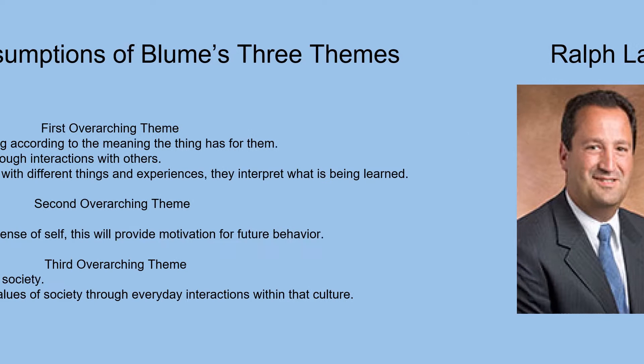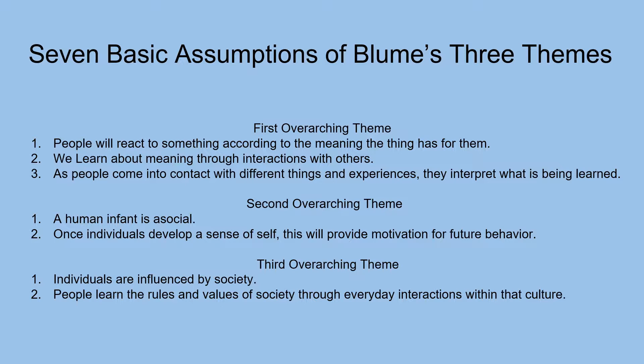The seven basic assumptions organized around Blumer's three themes. First overarching theme: one, people will react to something according to the meaning that the thing has for them; two, we learn about meaning through interactions with others; three, as people come into contact with different things and experiences, they interpret what is being learned.